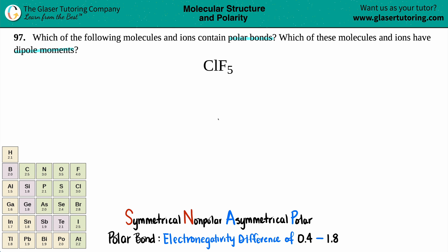So in this case, chlorine is going to be in the middle because chlorine is less electronegative than fluorine. More electronegative elements never in the middle. So we have five fluorines: one, two, three, four, and five.